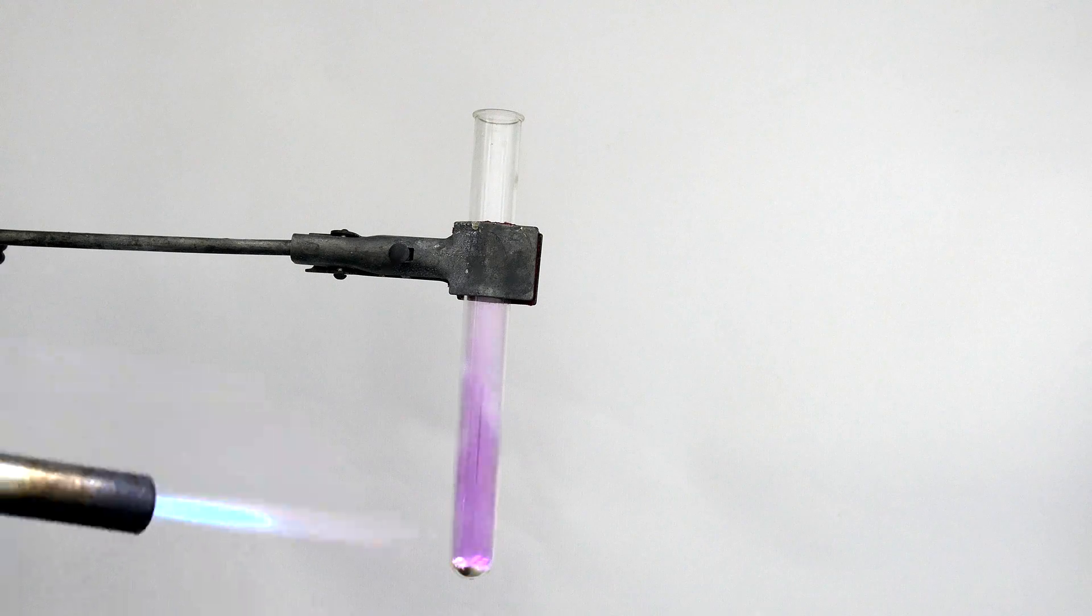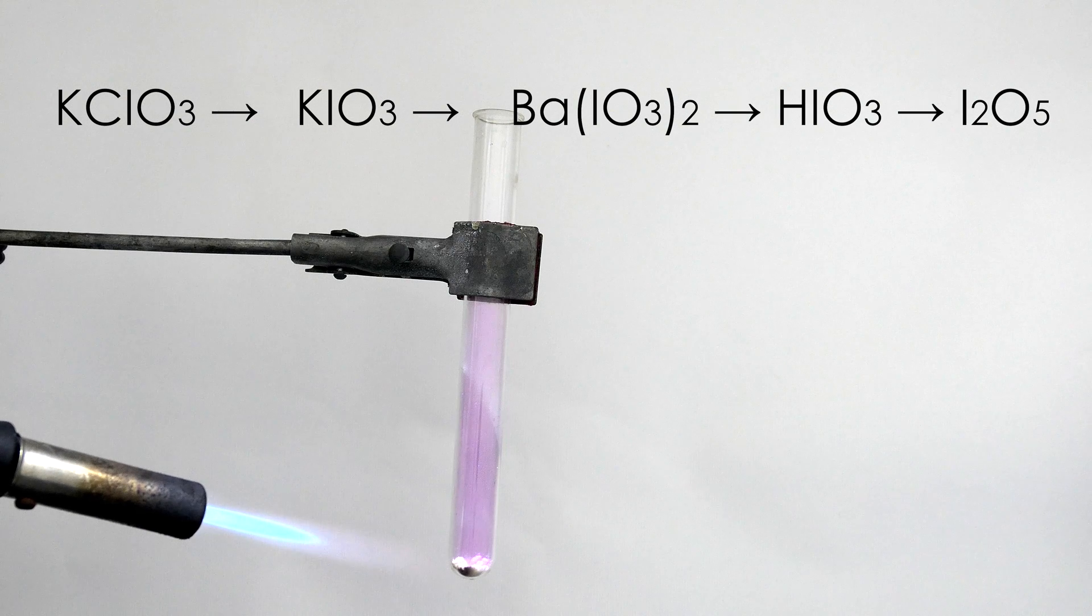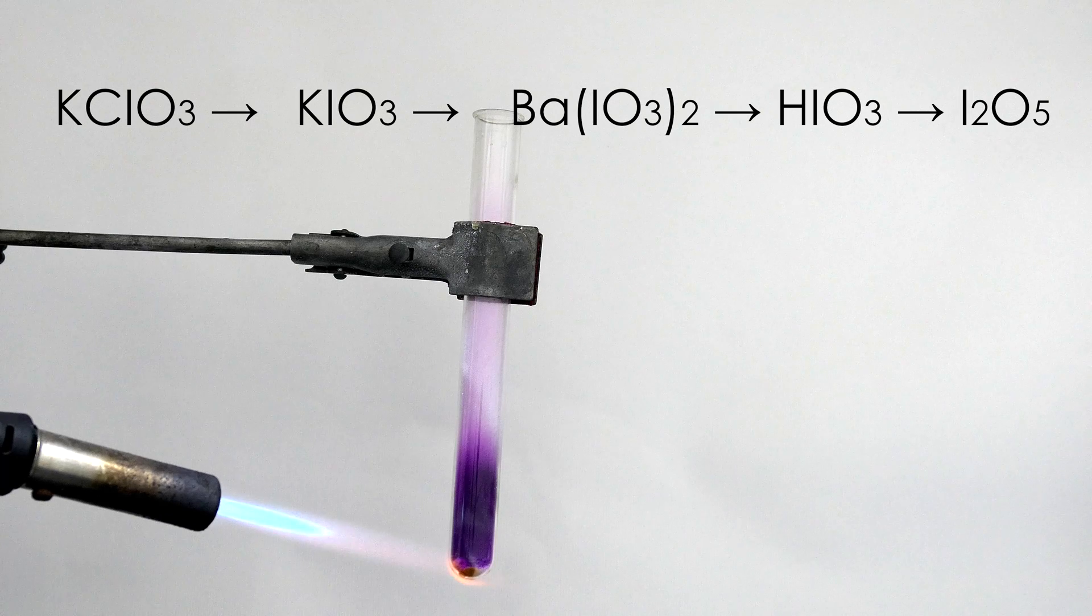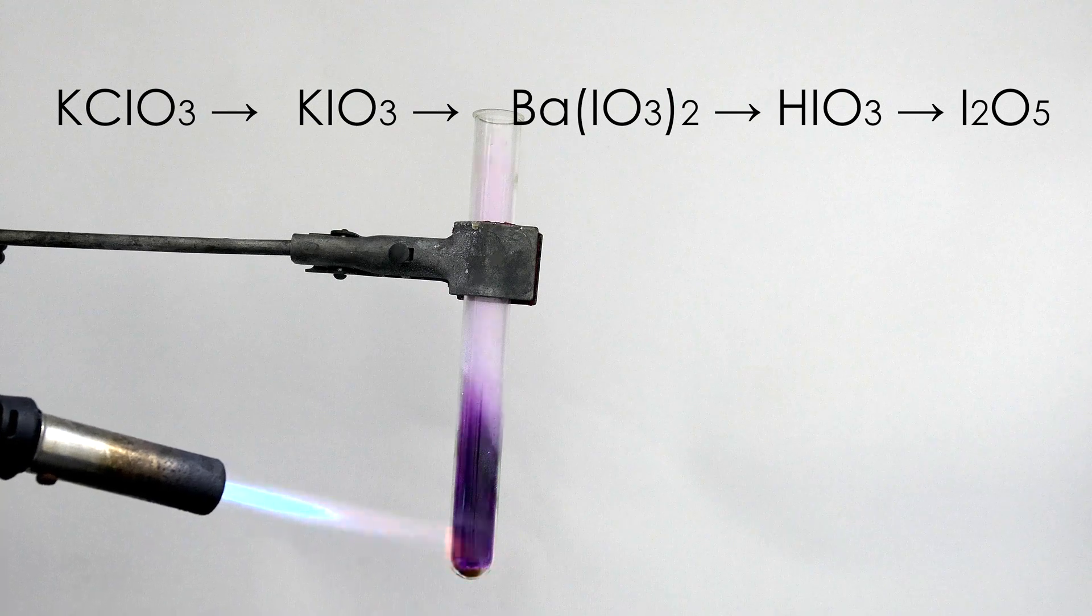To prepare this compound, I first convert potassium chloride to iodate, then to barium iodate, then it's reacted with sulfuric acid to get iodic acid. Finally, it's dehydrated to iodine pentoxide.